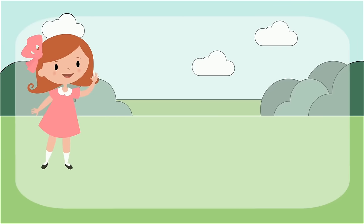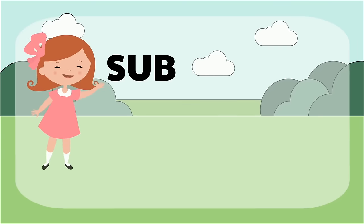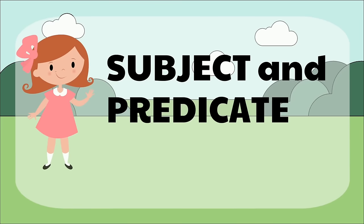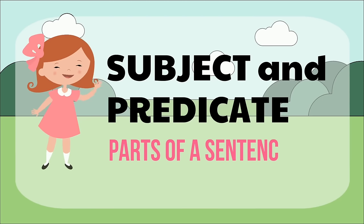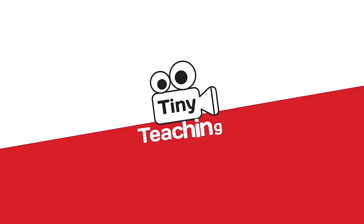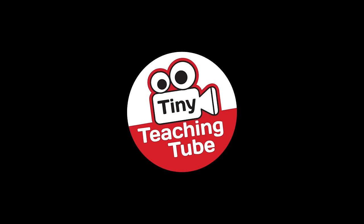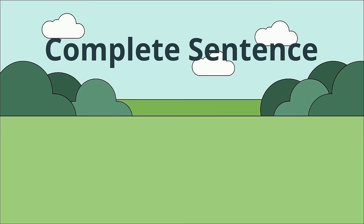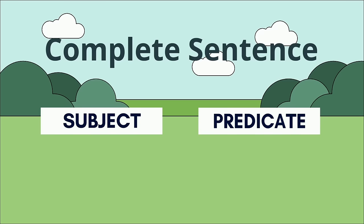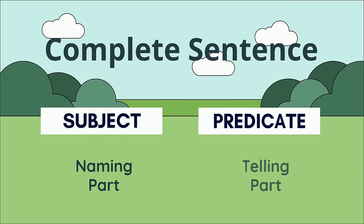Hi there! In this video, we're going to learn about subject and predicate, two important parts of a complete sentence. A complete sentence has two parts: subject and predicate. A subject is the naming part and a predicate is the telling part.